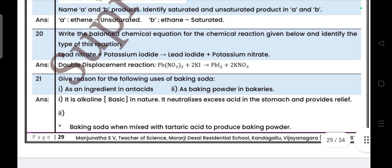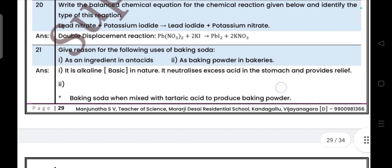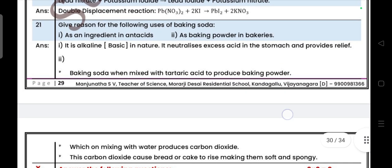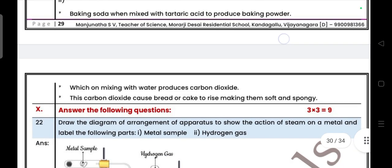Next: Give reason for the following. Use of baking soda, uses of baking soda as an ingredient in antacid and as baking powder in the bakeries.